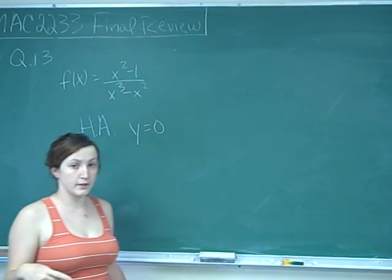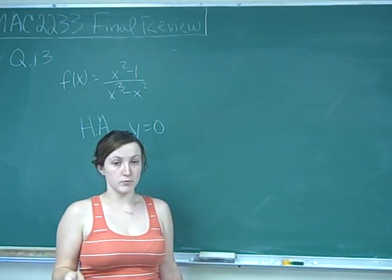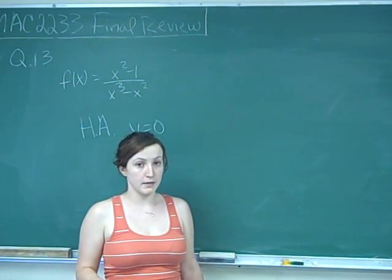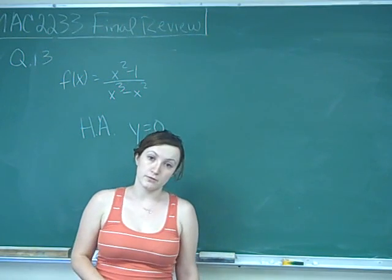If the degree of the numerator is larger, then we know that we don't have a horizontal asymptote. And if the degree of the numerator and the degree of the denominator are the same, then we look at the ratio of the leading coefficients.